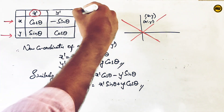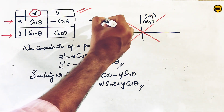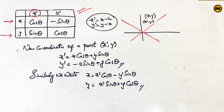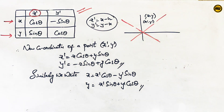To summarize with a table: for translation of axes, x-dash equals x minus h and y-dash equals y minus k. Translation changes the position of the origin but not the direction of the axes. Rotation of axes changes the direction of the axes but not the position of the origin. This completes the introduction video with the key formulas. Next video we will do important problems. Thank you for watching.